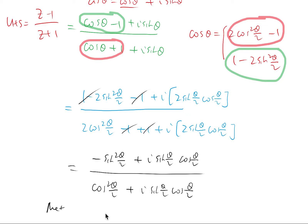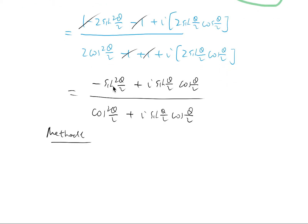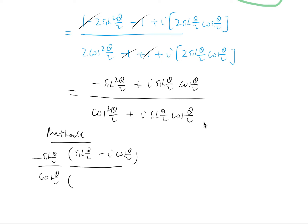Method 1: just take out common terms. On the top there is a sine in common, on the bottom there is a cos in common, so we'll take that out first. We have minus sine(θ/2) over cos(θ/2), and then on the top we're left with sine(θ/2) minus i cos(θ/2), and on the bottom we're left with cos(θ/2) plus i sine(θ/2).